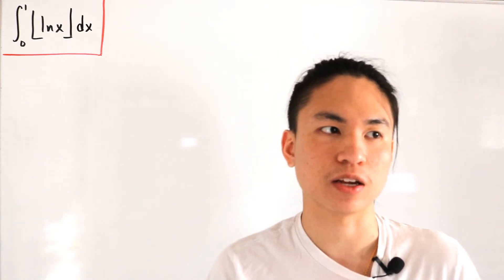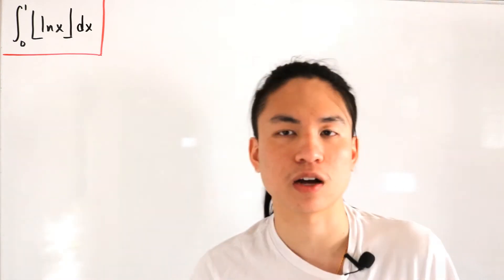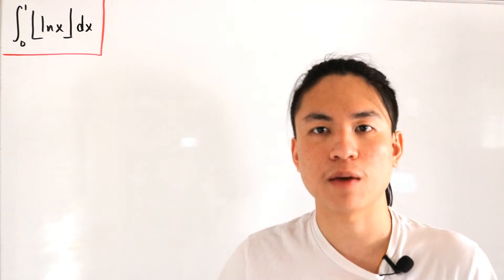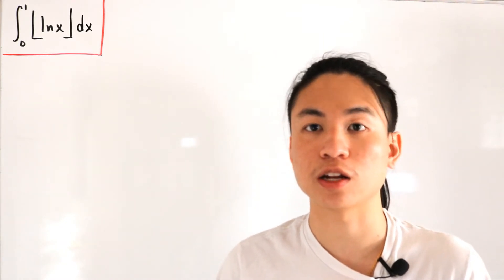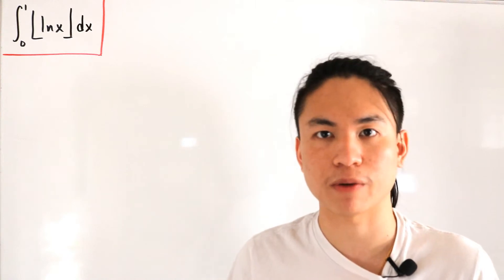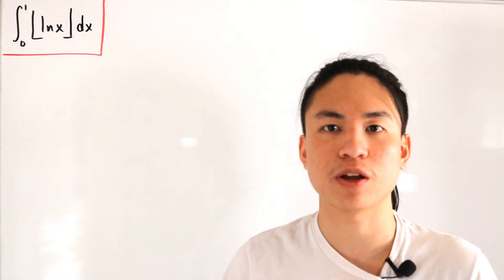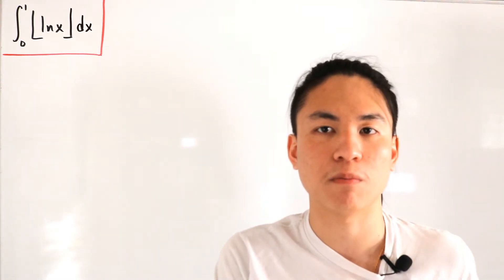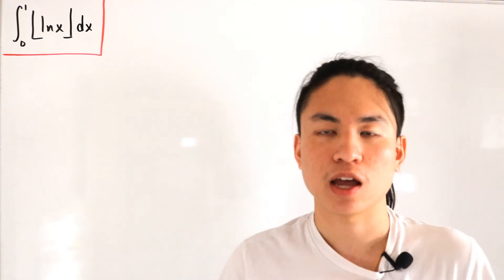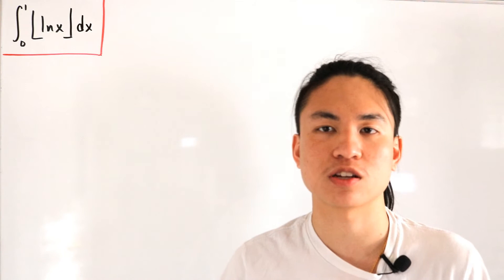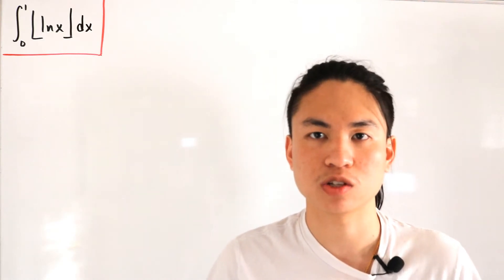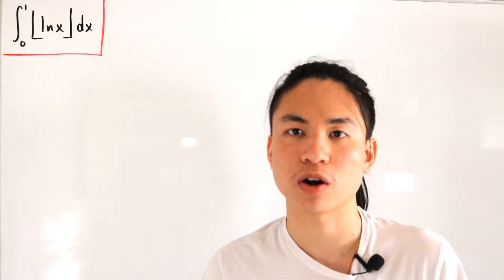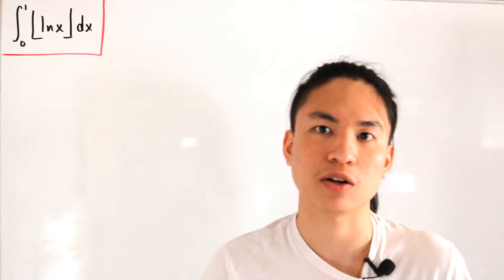The first key step is to perform a substitution. After doing the substitution and converting to new bounds, we'll get the integral in the form of an improper integral — with the floor function still present. Then we can utilize the infinite sum, breaking up each integral one step at a time. This ultimately reduces to evaluating a geometric sum, which I proved in a previous video.